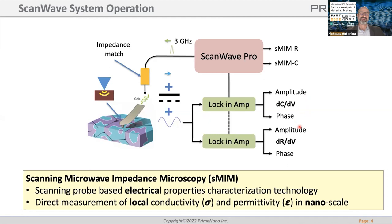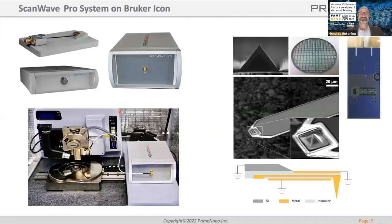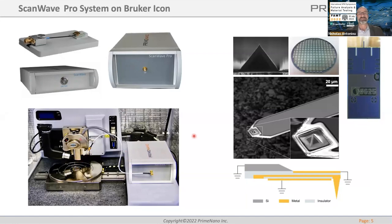You can also do dRdV, and in addition you can add a DC signal and ramp it — I'll show examples of that. These are pictures of the system. The three main components are: a probe interface module which holds the probe and provides impedance matching; an extremely low-power, low-noise power supply that powers the RF generator; and here you see it installed in our lab with the RF generator connected to the probe interface module and the cantilever on the head.